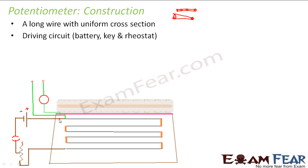Let us call the two ends of the long wire point A and point B. The third component is a galvanometer. One end of the galvanometer is free, while the other end is connected to a point on the long wire AB. It is connected with the help of a jockey — shown here in pink. The jockey is capable of sliding from one point to another on the wire, so you can slide it to note the deflection of the galvanometer at different positions.